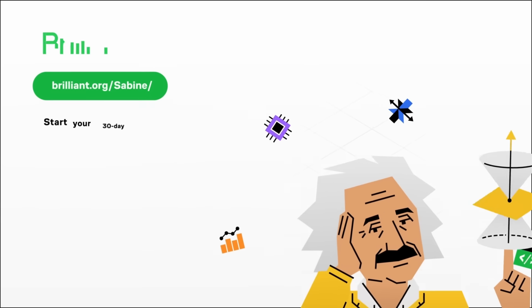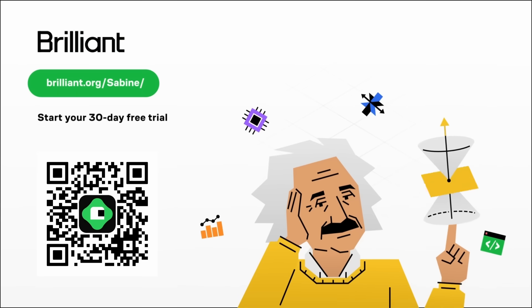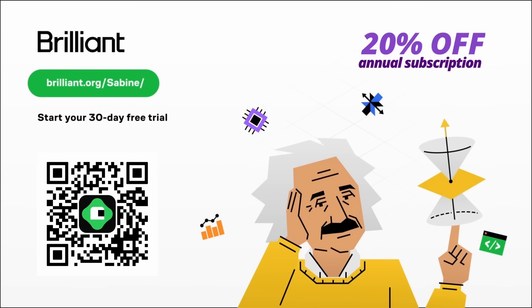I really enjoy the courses on Brilliant, not just because they keep my brain active, but also because it's a great way to systematically build up new knowledge to higher levels. If that sounds like the right thing for you, use my link Brilliant.org/Sabine to give it a try. First 30 days are free and with this link you'll get 20% off the annual premium subscription. It's a great way to learn more and to support this channel.